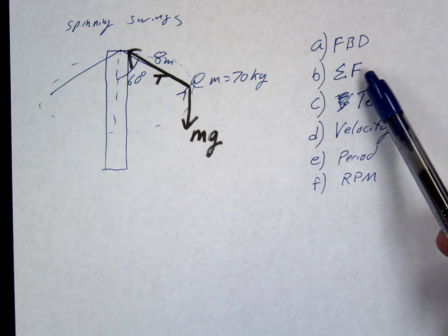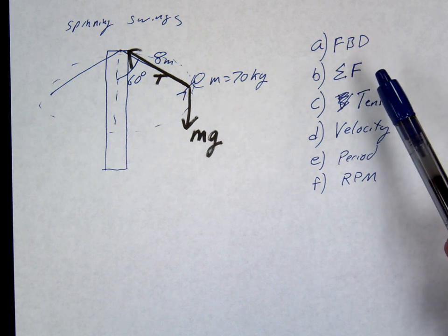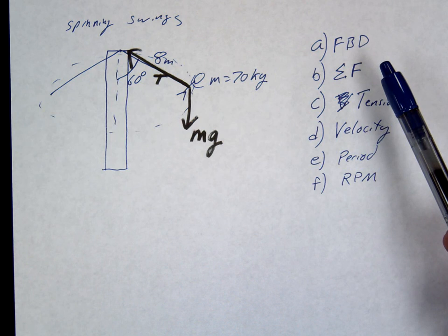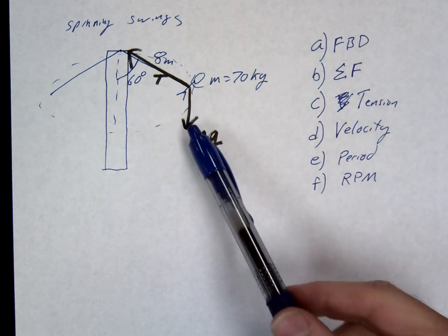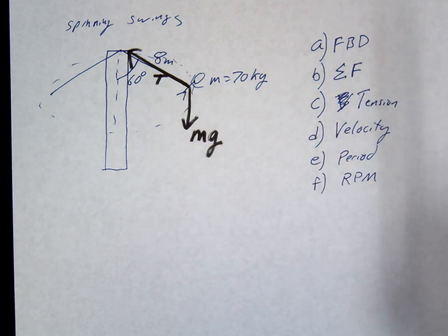However, we do have an issue here, and that is we want to just have x's and y's. And mg's okay, but what's wrong with tension? It's at an angle, yeah.